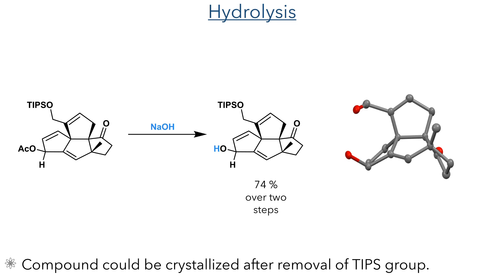The removal of the TIPS group allowed the researchers to crystallize the molecule, and X-ray crystallography proved the structure of the compound, clearly showing its ball-like topology.